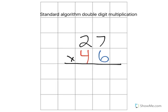I'm going to give you an example on how to do the standard algorithm for double-digit multiplication. The first thing we're going to do is multiply the ones position by 27 by the ones position. So the first thing I'll do is multiply.